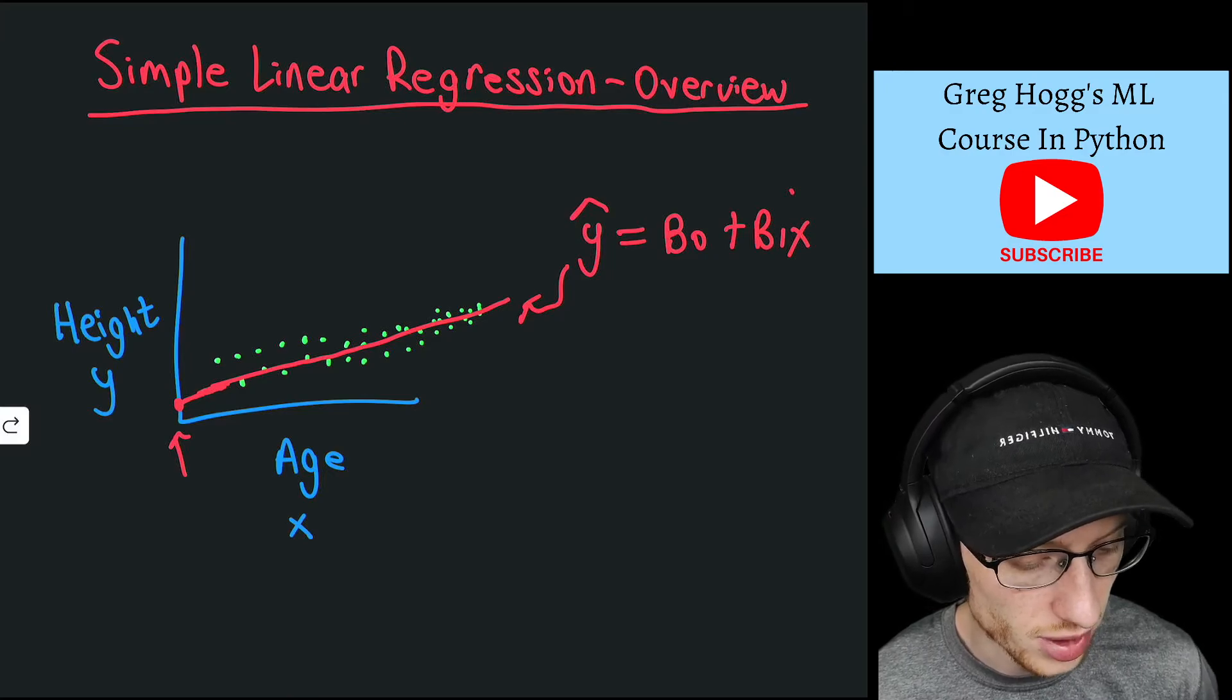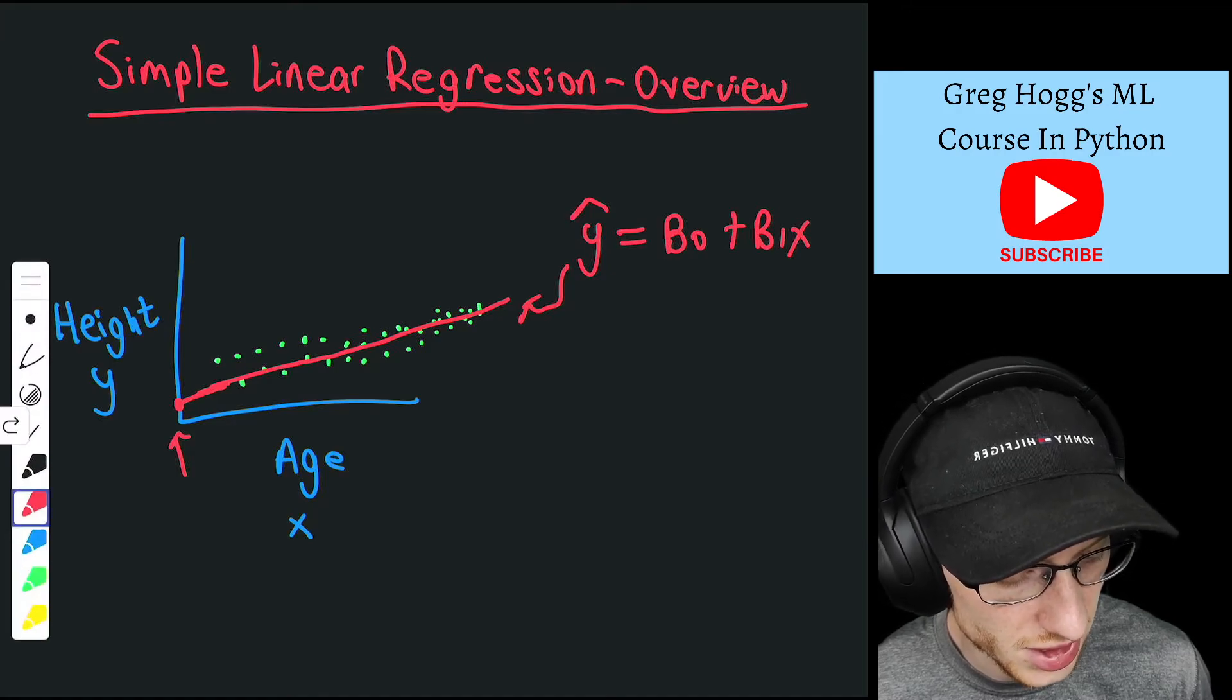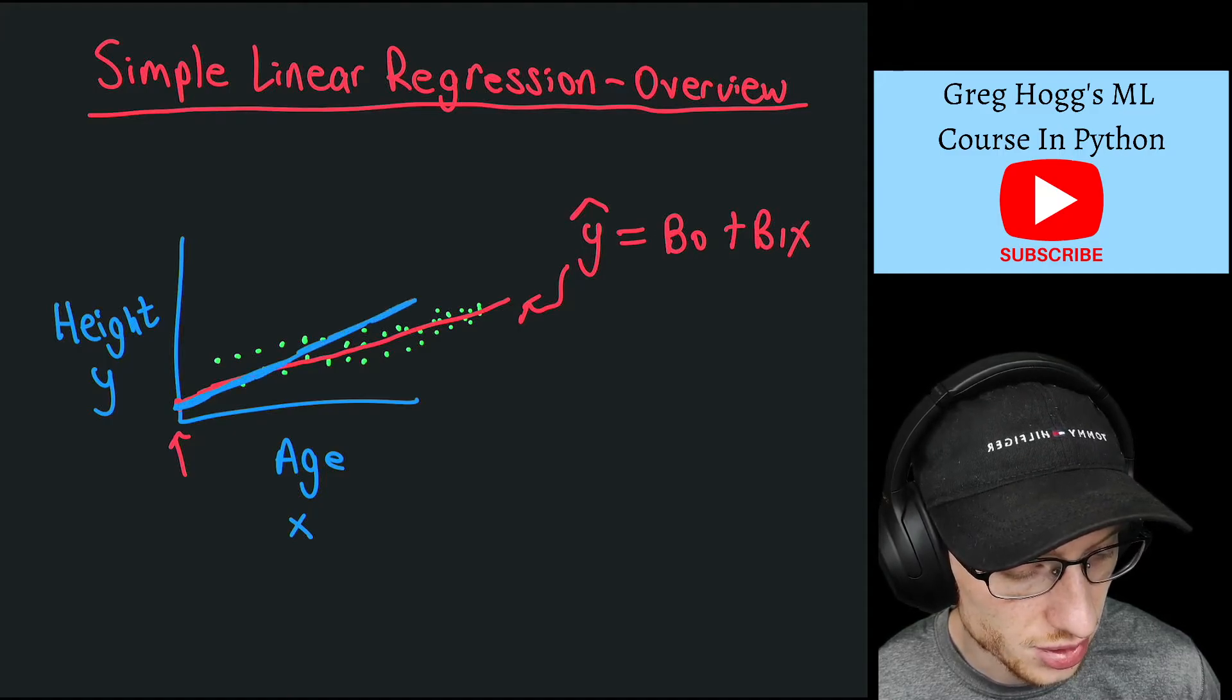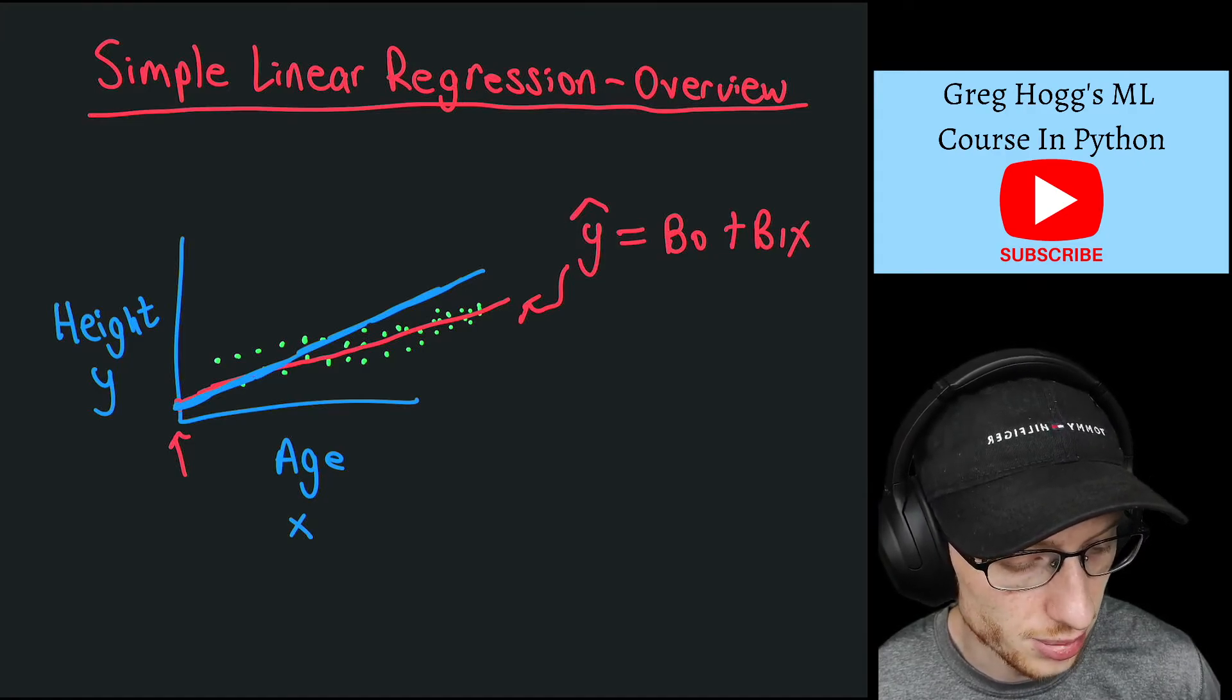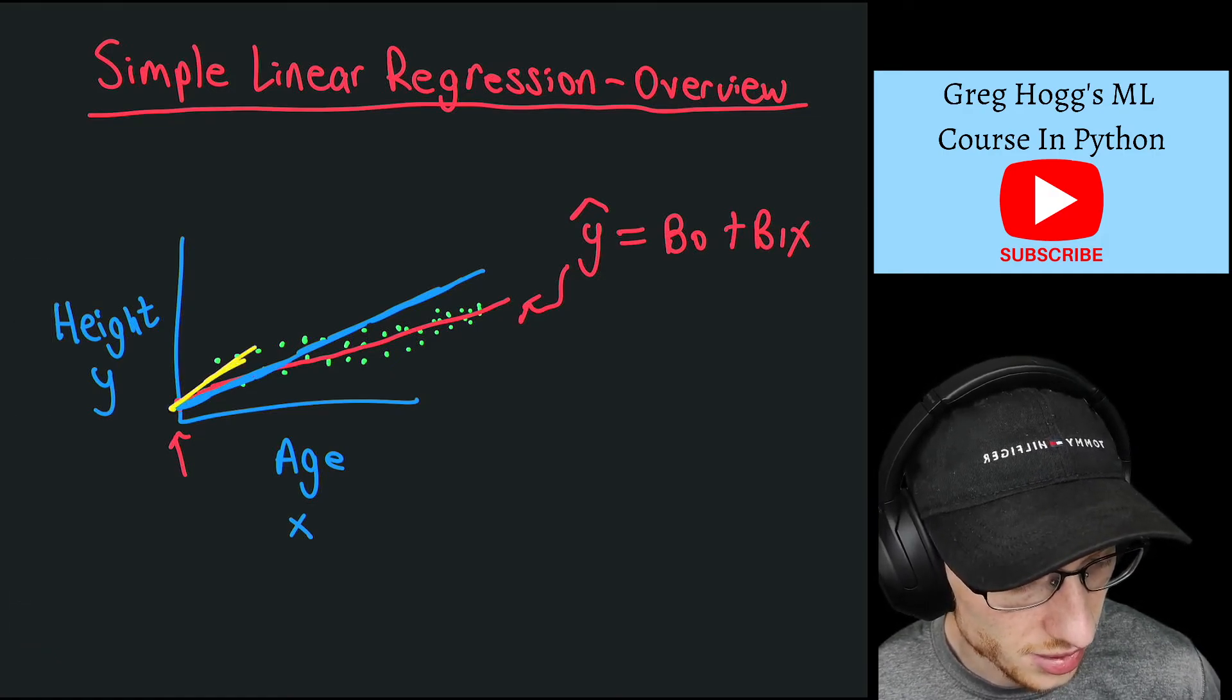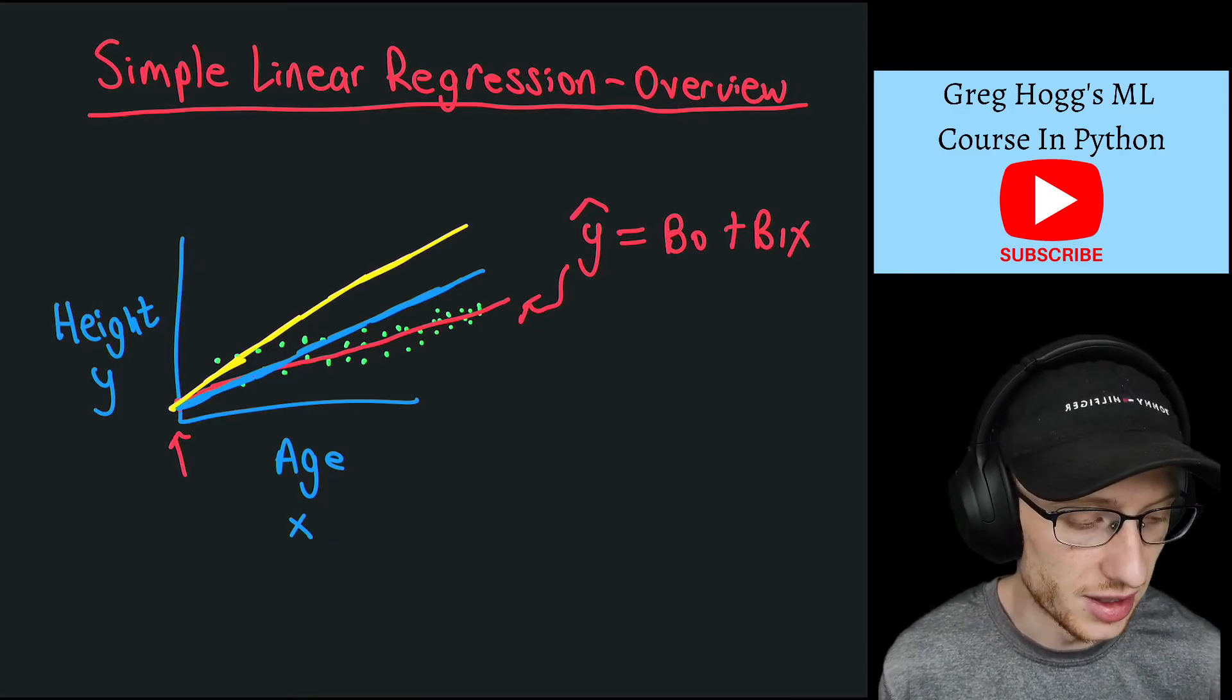We also have beta 1, which is the slope, okay, the slope of the line. So that basically means if I was to change beta naught or if I was to change beta 1, if I was to increase beta 1, maybe it would be more like this. So the same beta naught, holding that constant, but it would go up like that. Or maybe a different one up like, let me use yellow, maybe up like this. Okay, so that is beta naught and beta 1—it's what makes up our line.